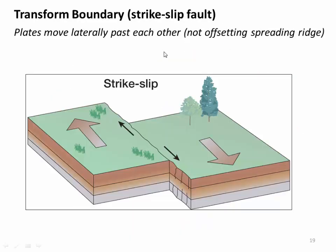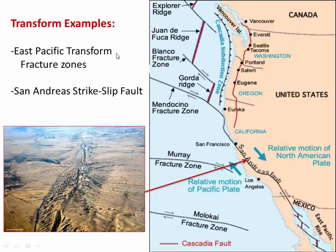Strike-slip fault is a more general term for a transform boundary. A couple of examples using the western U.S.: there's a spreading ridge, the Juan de Fuca Ridge, sitting off the coast of Washington and Oregon, and it is offset by several fracture zones, including the Blanco Fracture Zone. So this is a transform boundary between these two mid-ocean ridge segments. A good example of a strike-slip fault, of course, is the San Andreas, running north to south through California. It's the boundary between the Pacific Plate and the North American Plate, where these two plates are moving roughly laterally past each other. Where we're not building mountains, we literally just have a gash which marks the boundary between Pacific on this side and North America on this side.